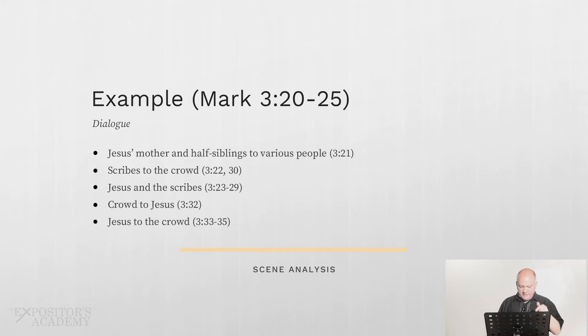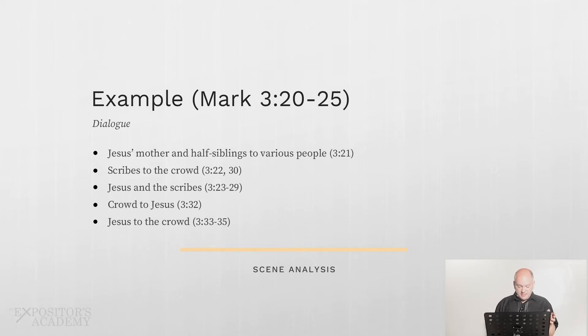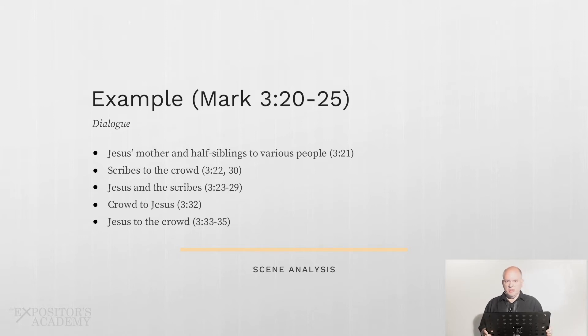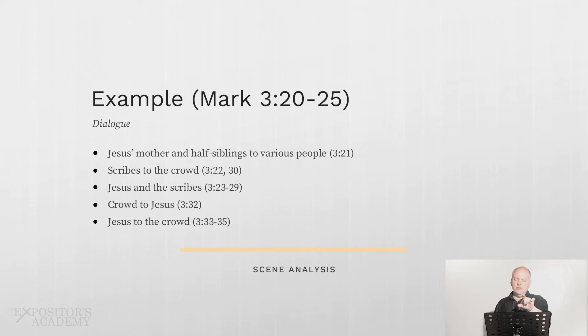What I want to focus on is the dialogue section in the textual observation list. There are about five bullet points there. I'm observing the dialogue that takes place: Jesus's mother and half-siblings speaking to various people in verse 21; scribes making a statement to the crowd in verses 22 and 30; Jesus and the scribes in verses 23 through 29; and the crowd to Jesus and Jesus to the crowd. When looking at a narrative passage, one of the key things to observe is dialogue.